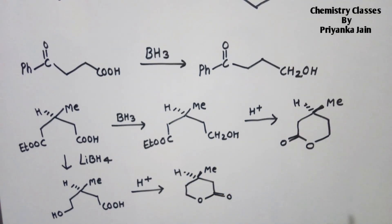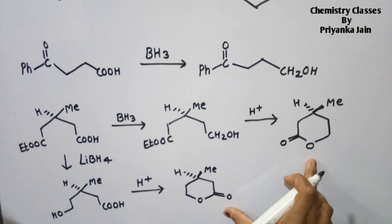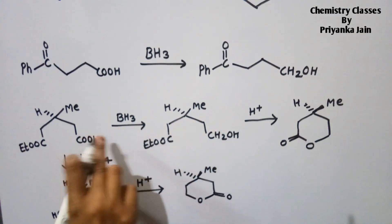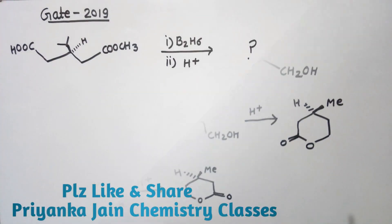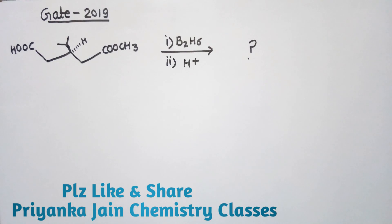Looking at the stereochemistry of the two products, we see that these two are enantiomers of each other. By using two different reagents (BH3 vs LiBH4), we obtain enantiomeric products. This is the key difference between the two reagents. This reaction is highly important — it has been asked two to three times in the GATE exam and may also appear in the CSIR NET exam.